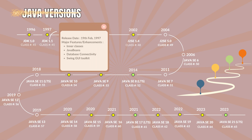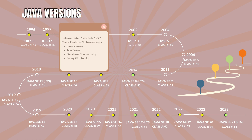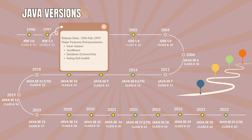Java 1.1 with the class file version 45.3. It was released on 19th February 1997. The major features and enhancements are Inner Classes, JavaBeans, Database Connectivity, and the Swing GUI Toolkit.